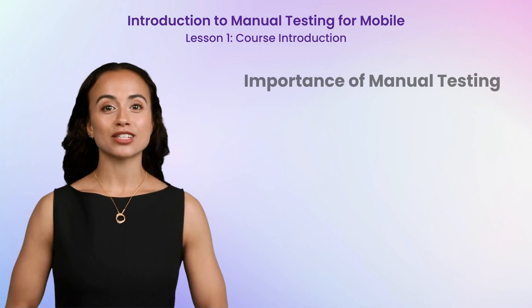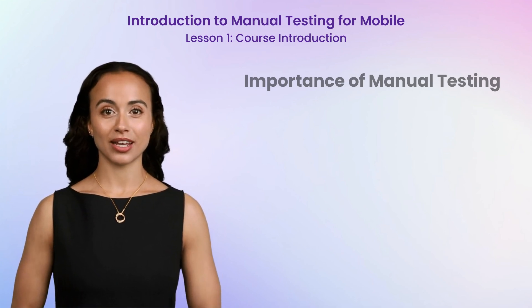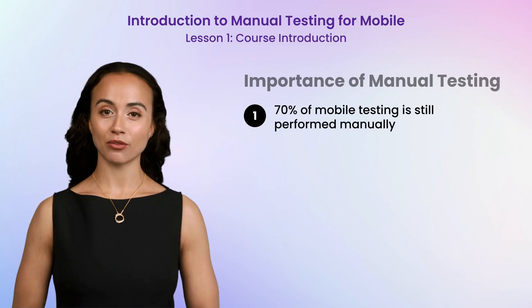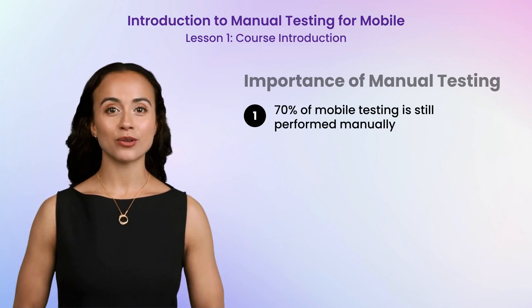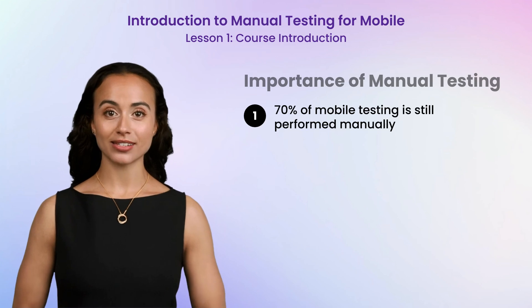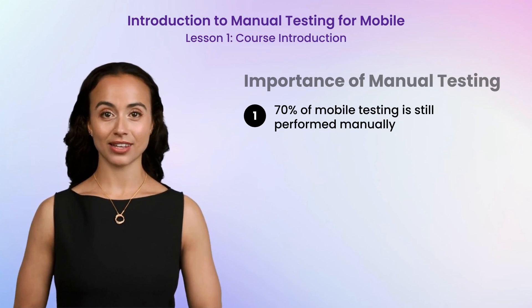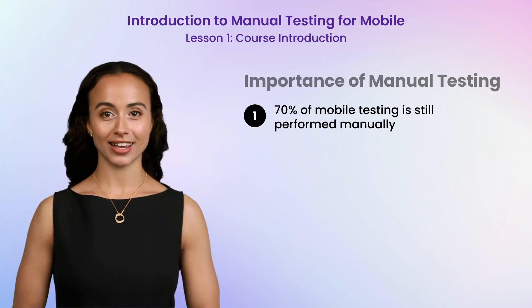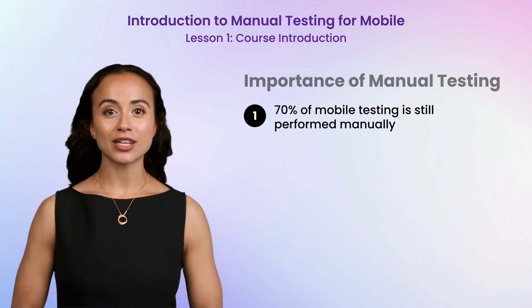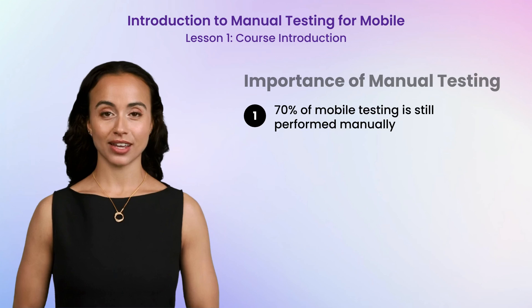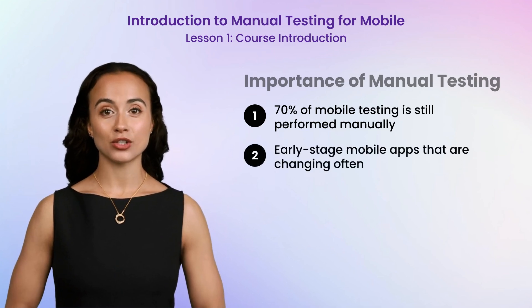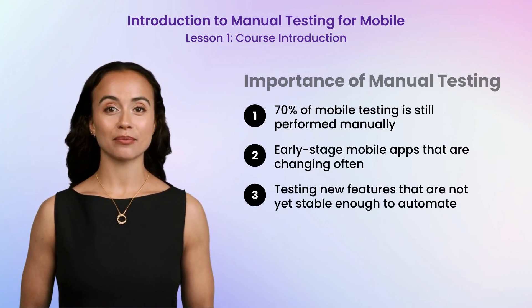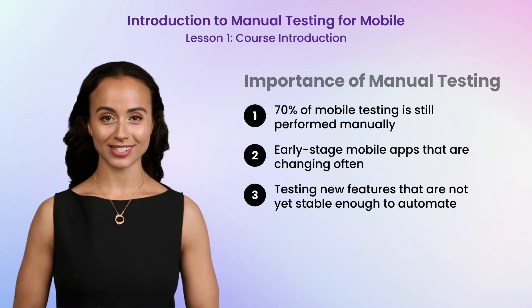Now let's talk about why manual testing is so crucial in the software development lifecycle, especially for mobile applications. Did you know that approximately 70% of mobile testing is still performed manually? Manual testing plays a vital role in identifying usability issues, ensuring a seamless user experience, and catching defects that automated tests might miss. While automation has its place, especially for repetitive and regression testing, automating a mobile application that is constantly evolving poses significant maintenance challenges. Mobile apps frequently undergo updates and feature changes, which can render automated tests obsolete quickly. In such dynamic environments, manual testing becomes indispensable until the application stabilizes its functionality.